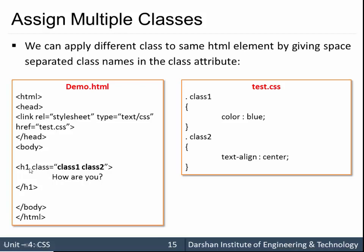Initially what we were doing was writing h1 class equal to class1 because I want to specify only a single class to that particular element. But if I want to specify properties of two different classes in the same HTML element, I can use space separated class names.